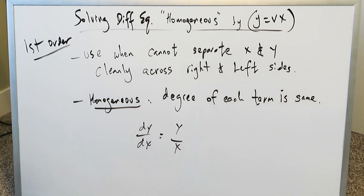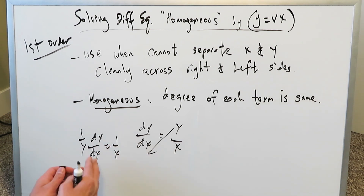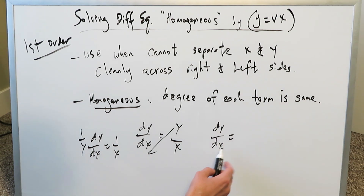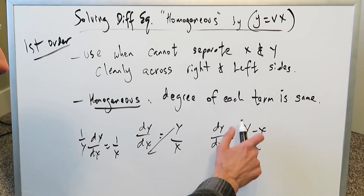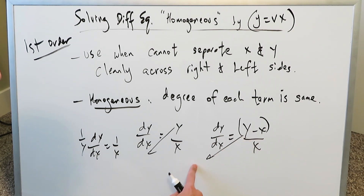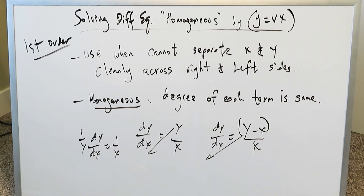If you have something like y over x, you can easily solve this. You can bring the y over here and you'll have 1 over y dy over dx is equal to 1 over x — you've separated the y and x across the left and right hand sides. But consider a differential equation which looks like y minus x over x. You cannot separate this x from this y because they are combined. These are the situations for which the y equals vx substitution method will come into play.